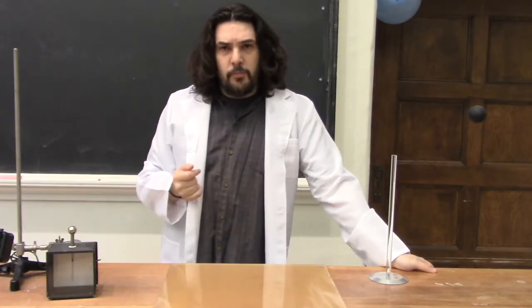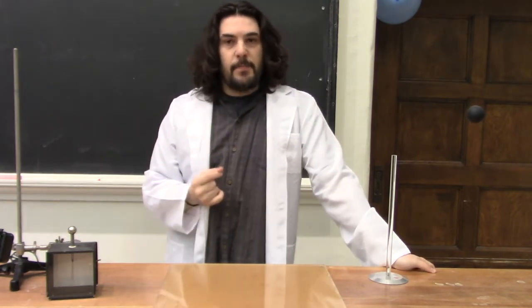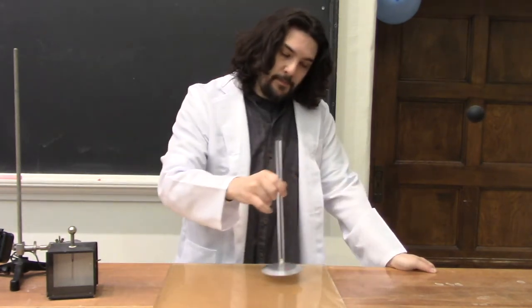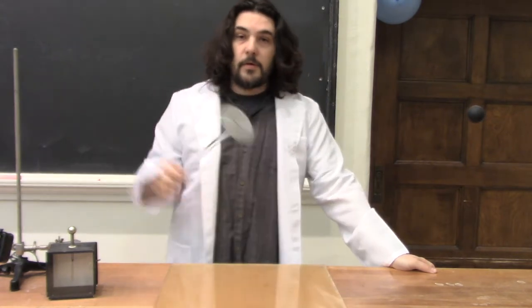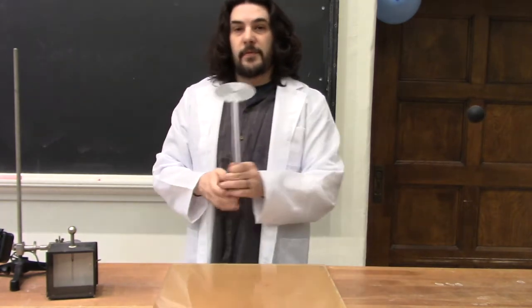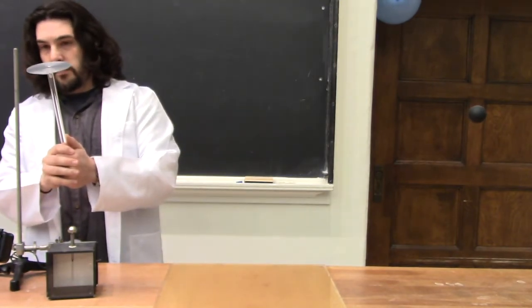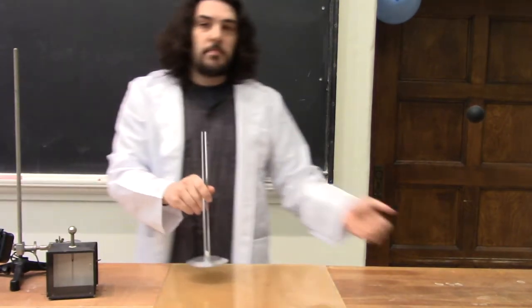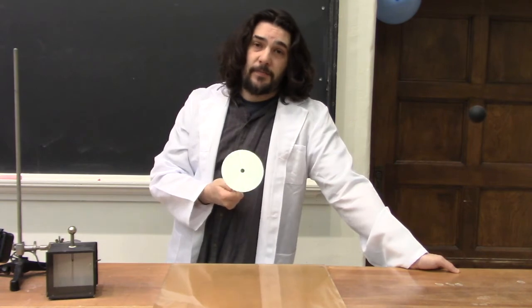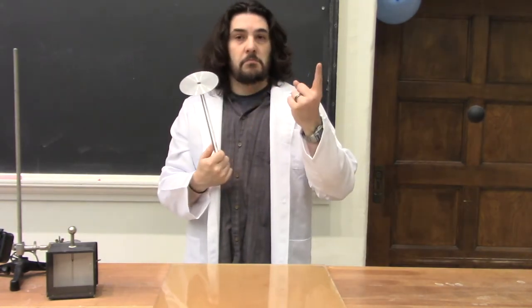The dielectric breakdown of air occurs at about 3 kilovolts per millimeter. So we can figure out approximately how much voltage is on this by seeing how far away it discharges. Let's say from this metal rod here. That was about 1 centimeter away. So this little guy was holding 30 kilovolts on it. And yet I barely felt a thing.